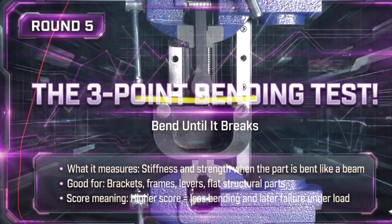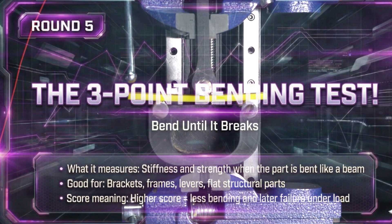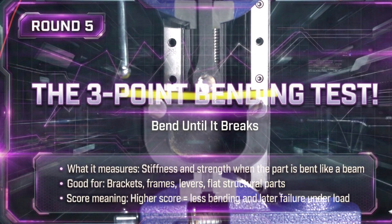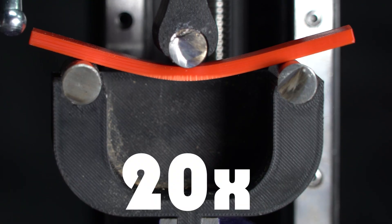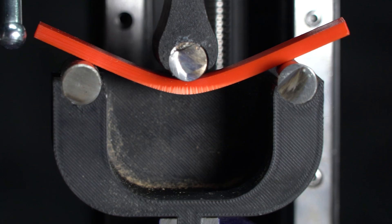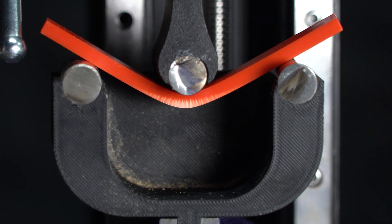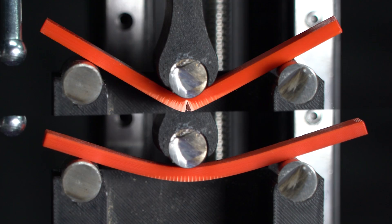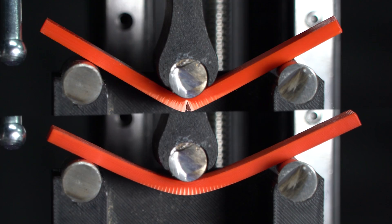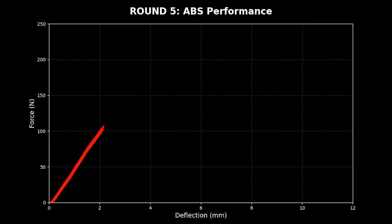Now, round 5, the three-point bending test. First up, the tank ABS. Let's see how it handles the bend. As you can see, ABS prefers to flex under stress. Look at the graph. It offers little resistance, just stretching under the load. It simply couldn't handle the pressure.